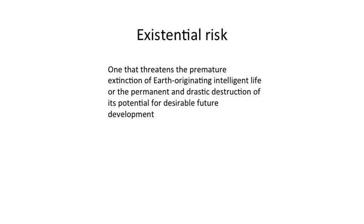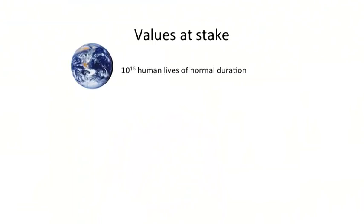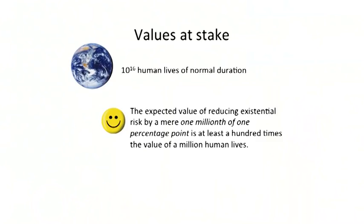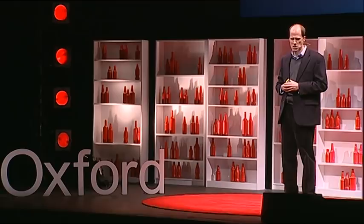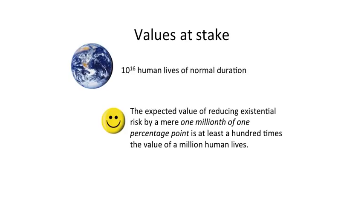Let's consider the values at stake. It's plausible that the Earth might remain habitable for at least another billion years. Suppose one billion people could live sustainably on this planet for that period, and that a normal human life is 100 years. That means 10 to the power of 16 human lives of normal generations could be lived on this planet if we avoid existential catastrophe. The expected value — multiplying value by probability — of reducing existential risk by a mere one millionth of one percentage point is at least 100 times the value of a million human lives.